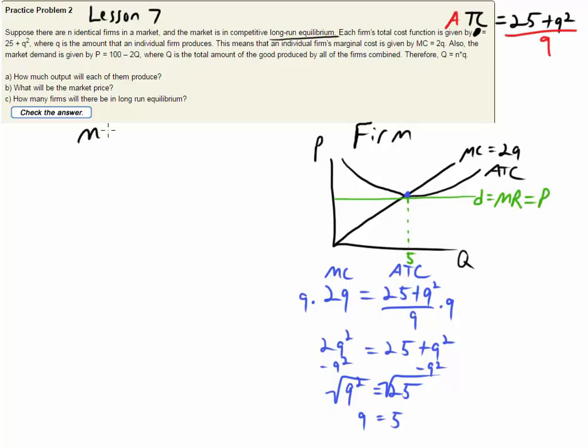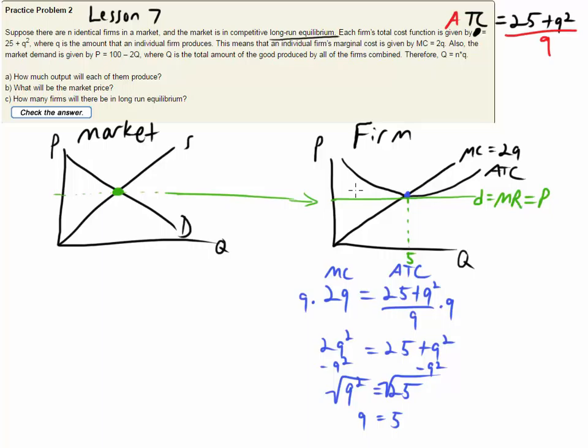Remember, there's a market which determines that price. And so that price is going to be determined from the market. This equilibrium price right here is going to feed over to the firm and they are going to be able to sell as many units as they want at that price. So we can figure out what this price is.